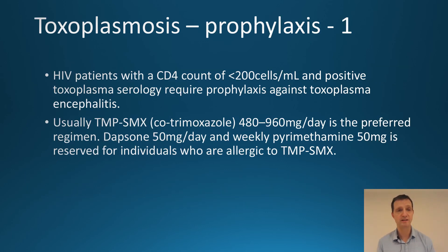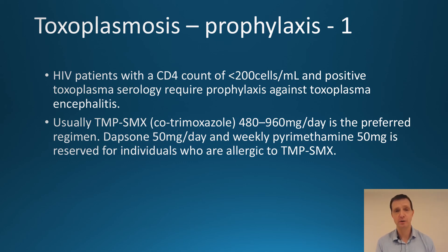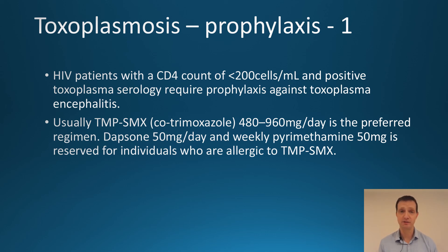In terms of prophylaxis, HIV patients with a CD4 count below 200 and a positive IgG require prophylaxis — the preferred regimen is cotrimoxazole 480 mg per day. You don't actually have to wait for a positive Toxoplasmosis serology: if someone has a CD4 count below 200, you'll be giving them cotrimoxazole 480 mg per day anyway to prevent PCP, but that is the subject of another video.